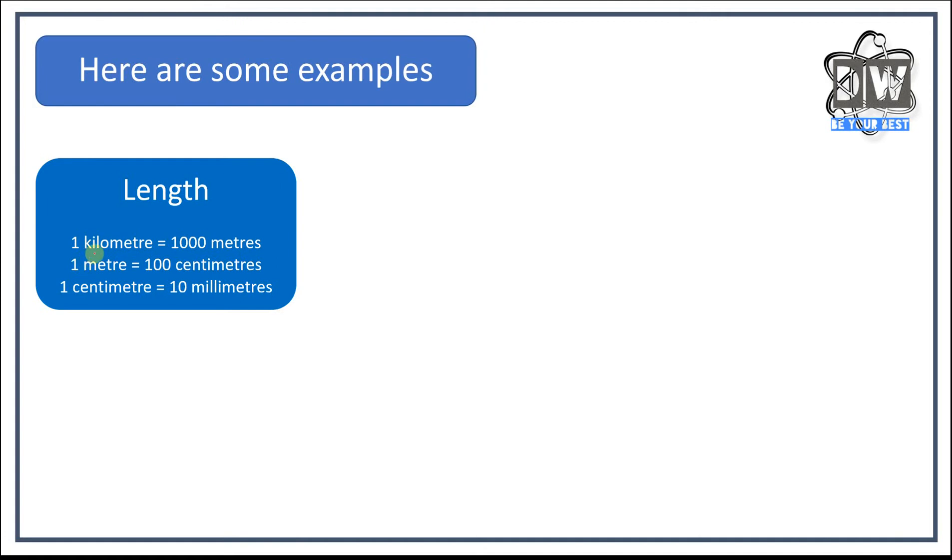If we wanted to find out what one meter is in centimeters we times it by a hundred. If we want to find out what centimeters are in meters we divide by a hundred. And if we wanted to find out what one centimeter is in millimeters we times it by 10. If we wanted to find out what millimeters are in centimeters we would divide by 10.